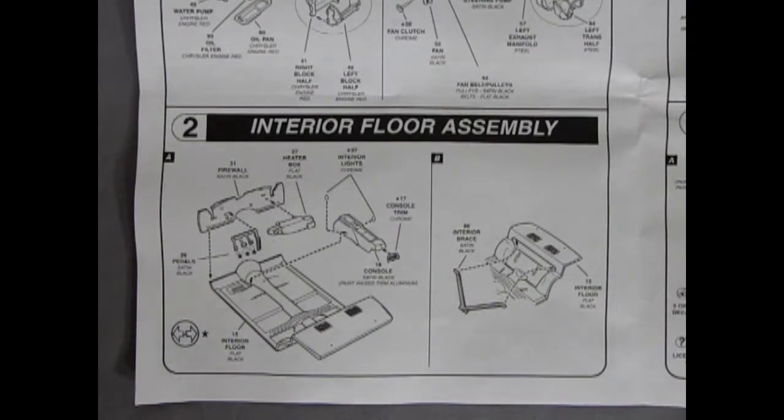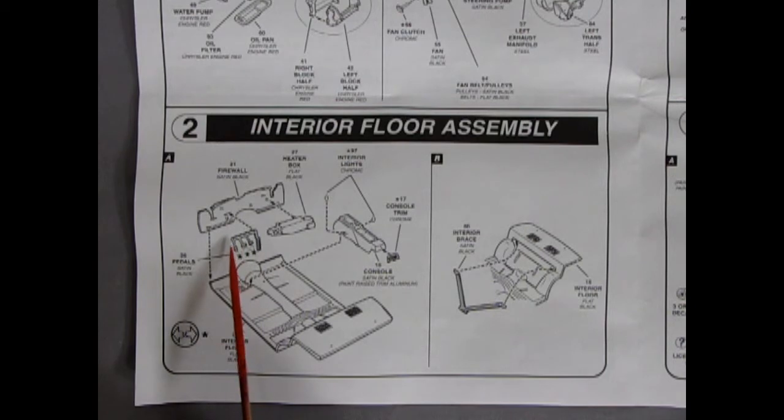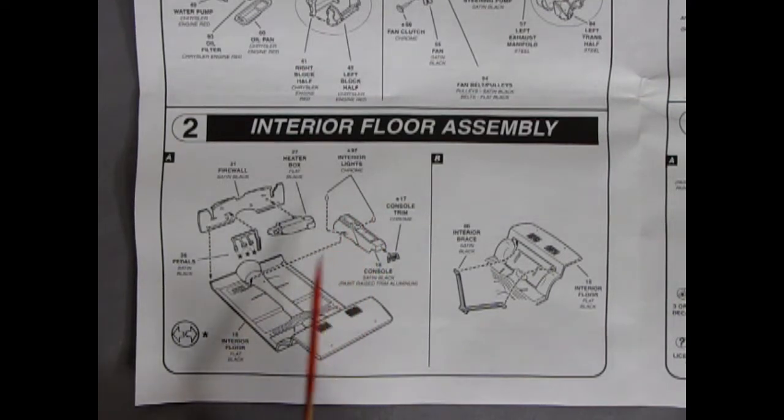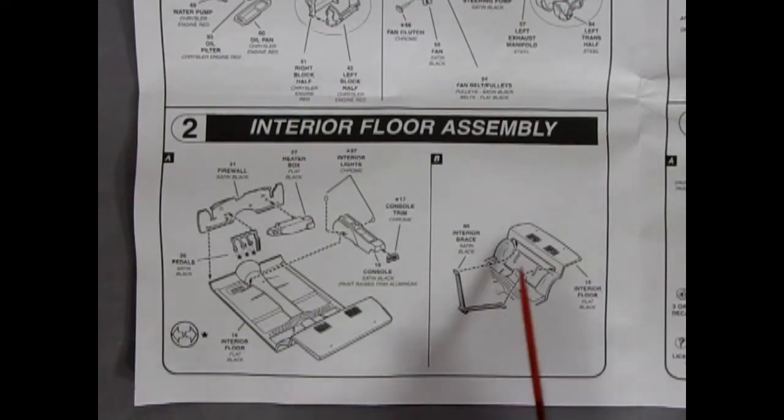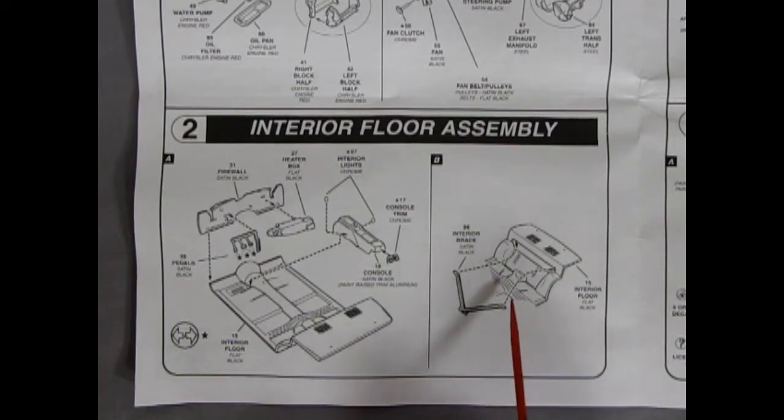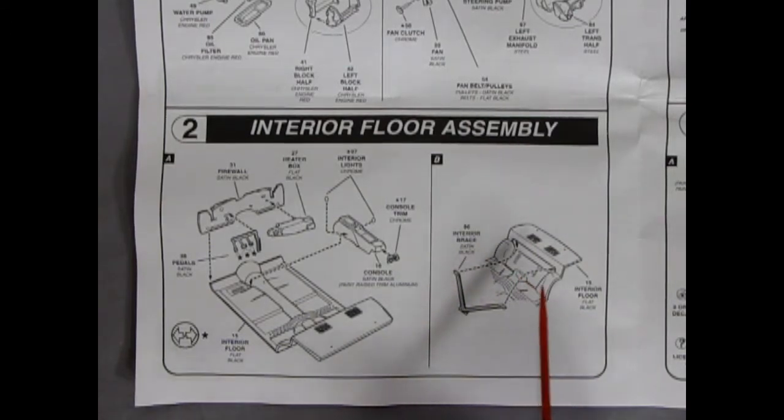Panel two is our interior floor assembly. Here we've got our firewall, the pedals gluing on. This one even includes a little parking brake. Here's our heater box. There's our console that has interior lights that glue on the side as well. As well as a trim piece on the end. And our interior floor mats going in there. Then there is a seat brace that comes in here which is kind of a cool thing even though it may be covered by the back seat.